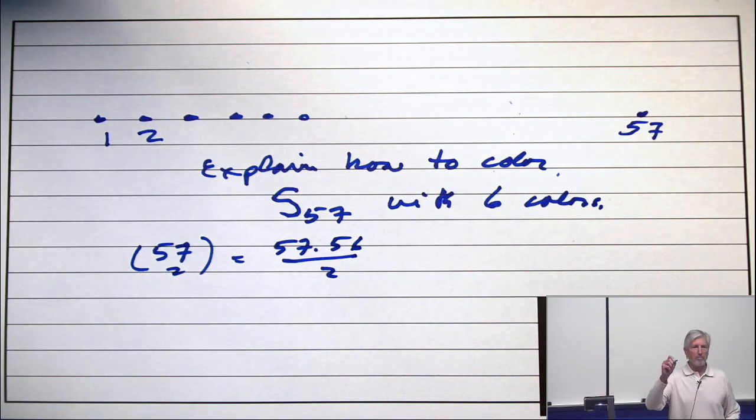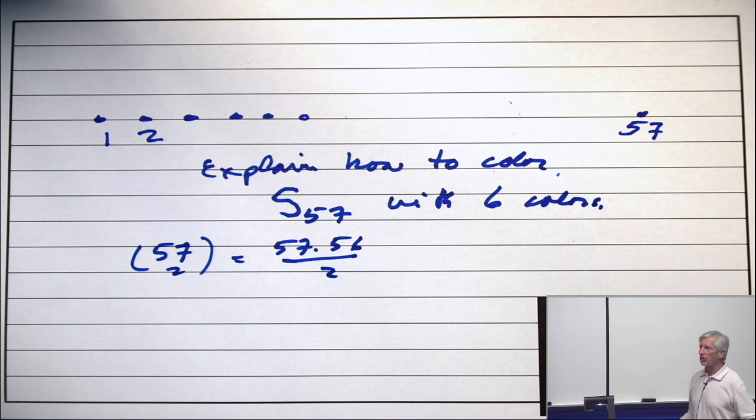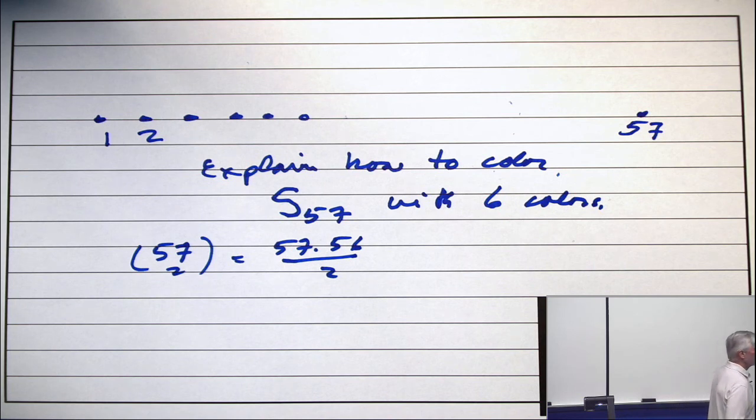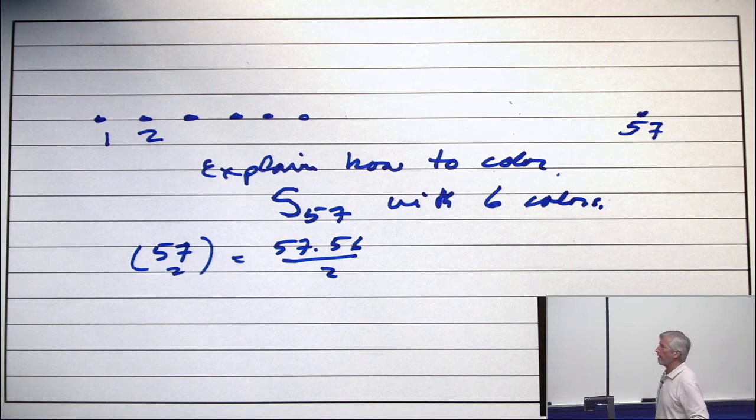I want you to give a method by which you could tell a UGA student to do the coloring for you. But you have to be prescriptive in how you do that. They're not too bright. Take a minute and see if you can explain how to color the shift graph S57 with 6 colors.